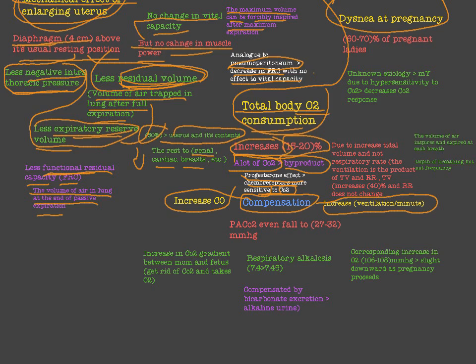The respiratory system tries to hyperventilate to get rid of the excess CO2 production. The increase in ventilation per minute depends on two factors: tidal volume — the volume of air inspired and expired at each breath — and respiratory rate, which is the frequency of respiration.